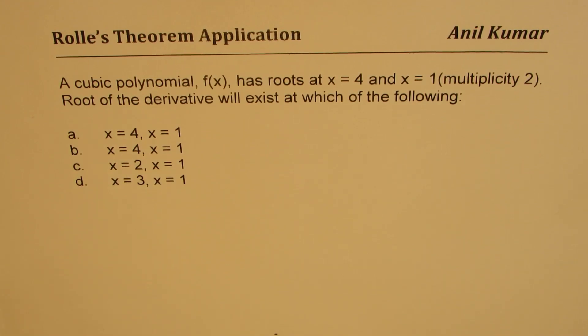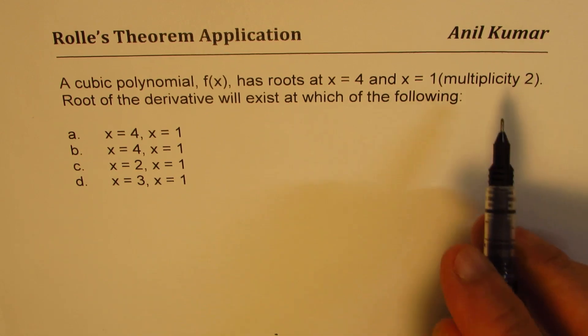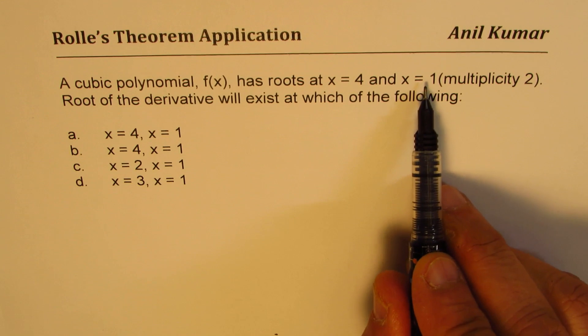I'm Anil Kumar. Welcome to my series on Rolle's theorem application. The question here is a cubic polynomial f(x) has roots at x equals 4 and x equals 1 with multiplicity 2, that means order is 2.